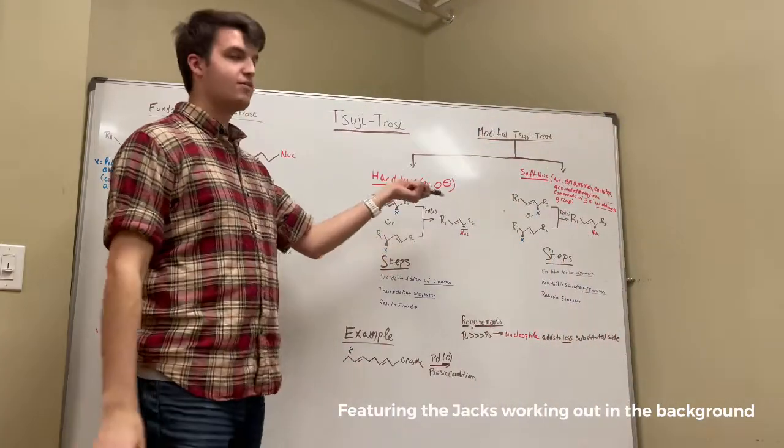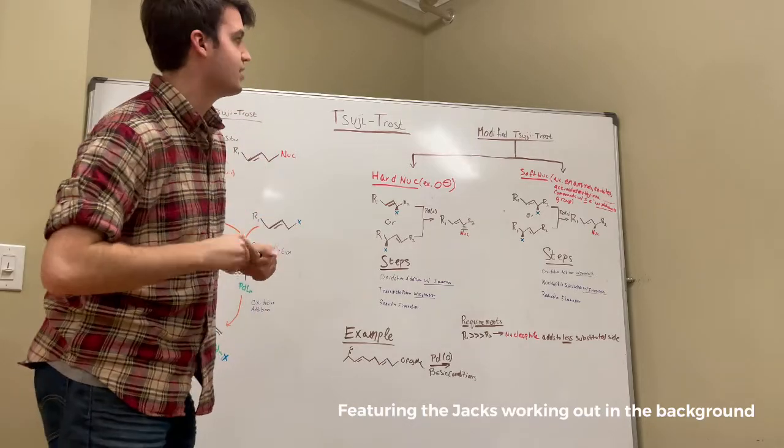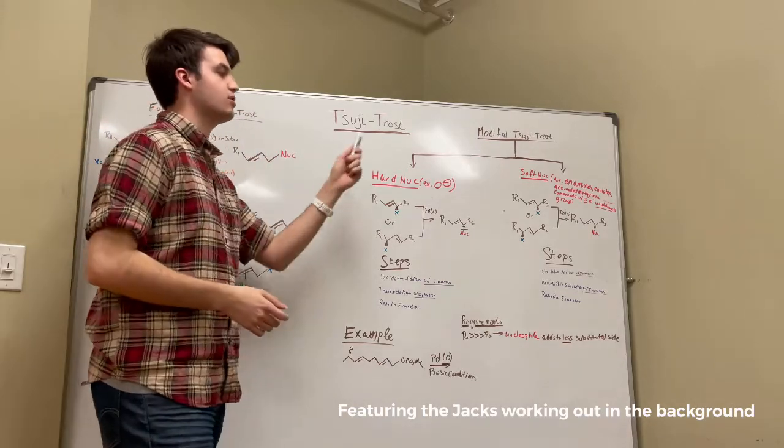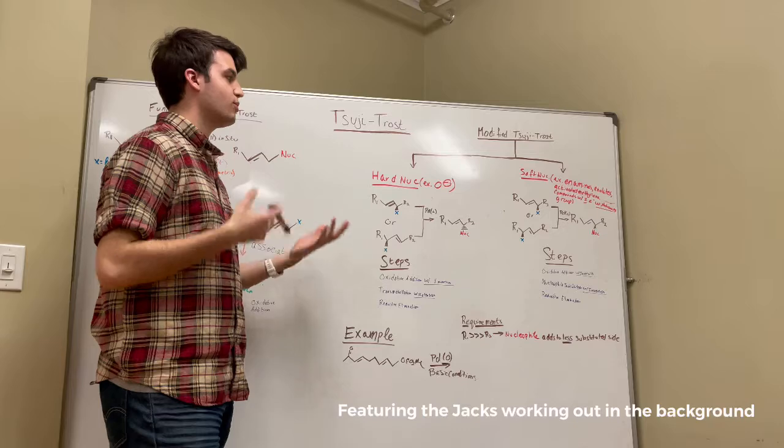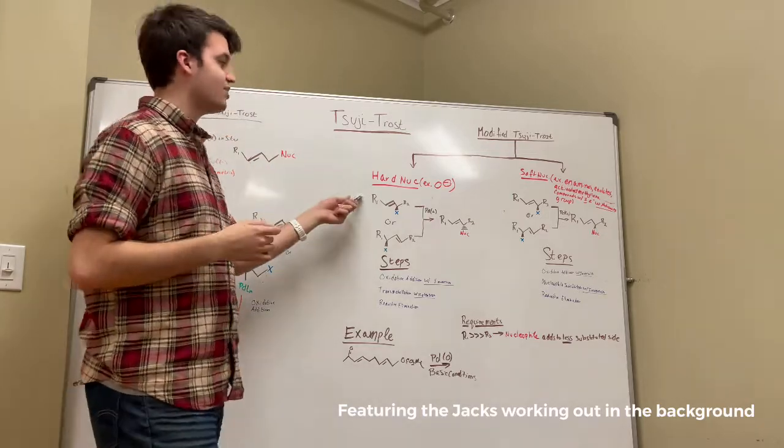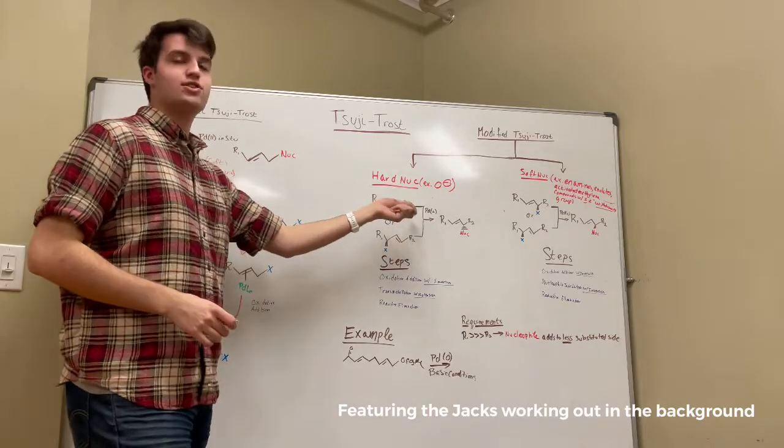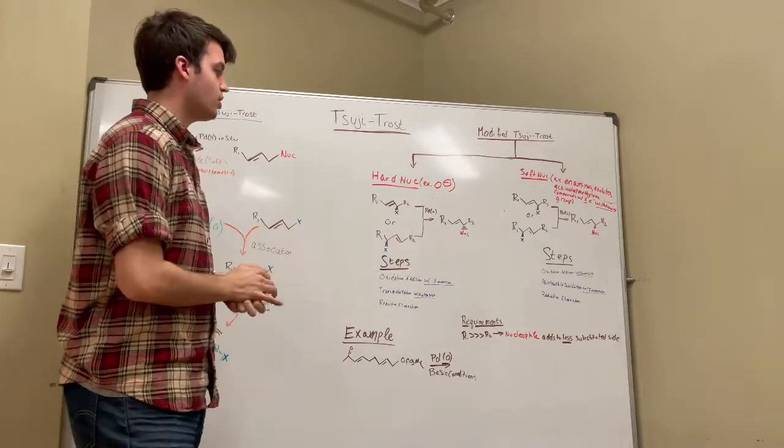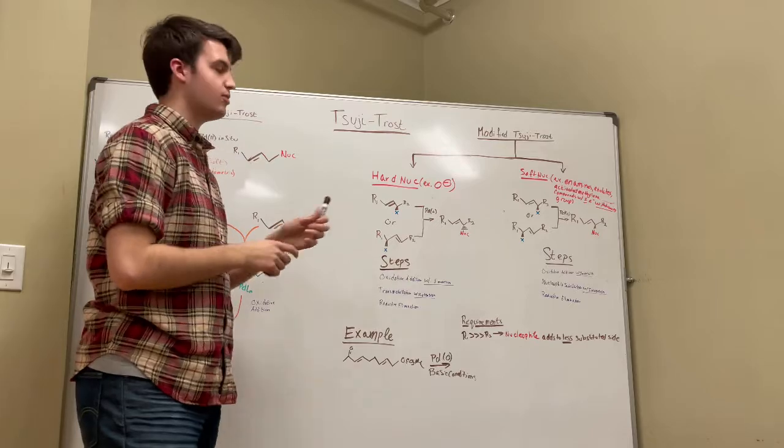Now, if we look at the modified Tsuji-Trost, this can actually be done with either a hard or a soft nucleophile, but whichever one you do it with affects the stereochemistry. If we use a hard nucleophile, which is usually like an oxidative minus, we get overall inversion of the stereochemistry, where the leaving group was, and the leaving group is now.